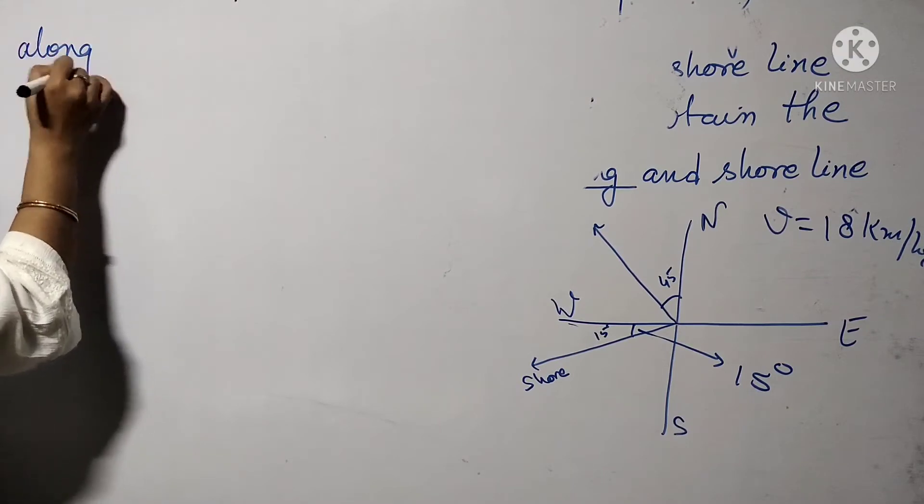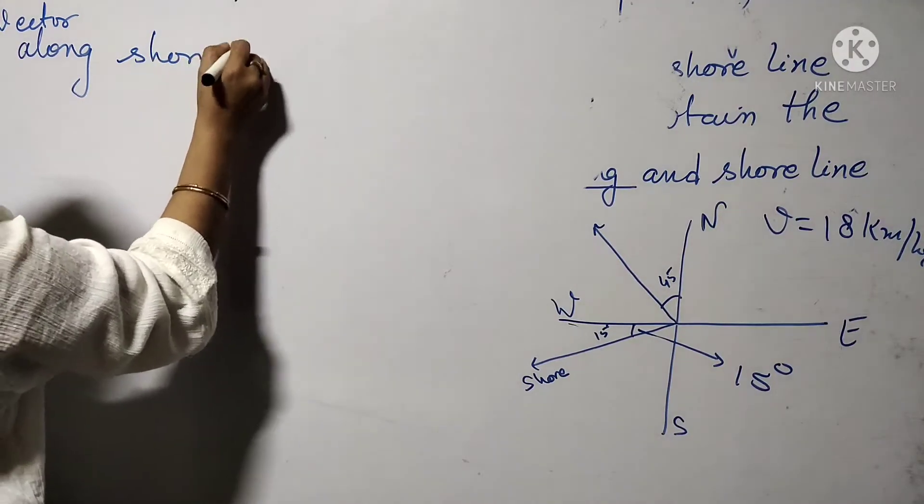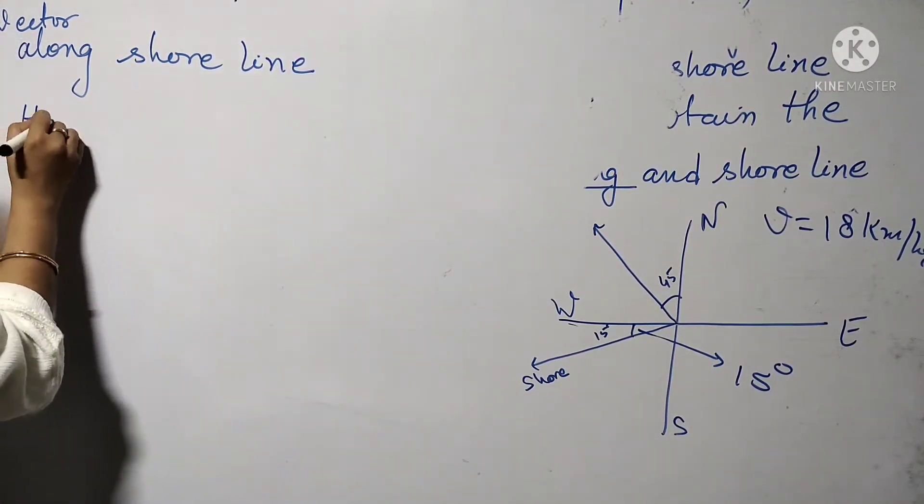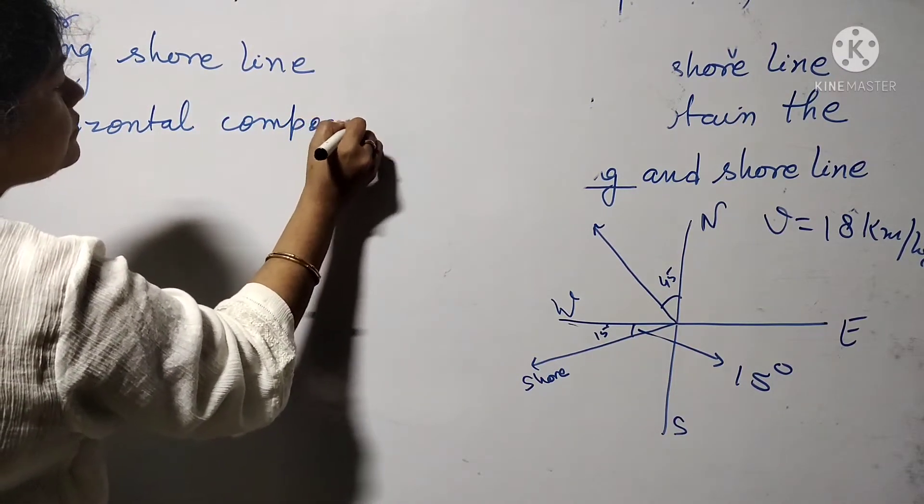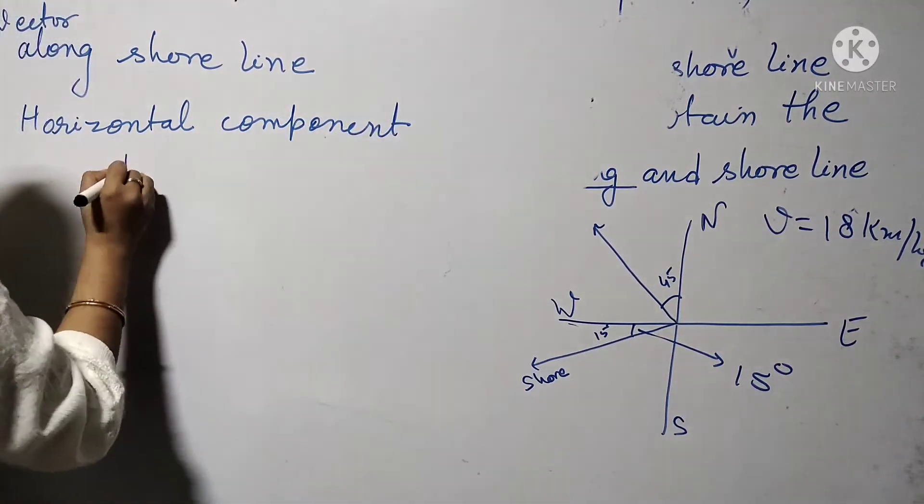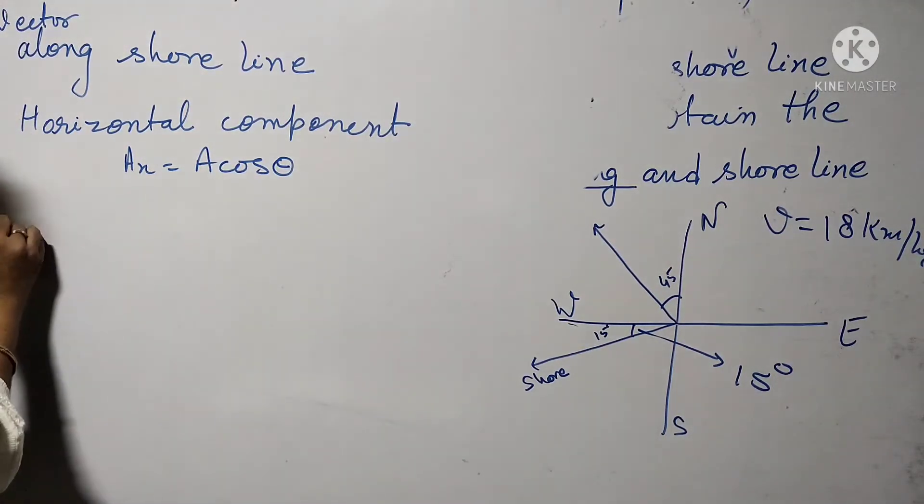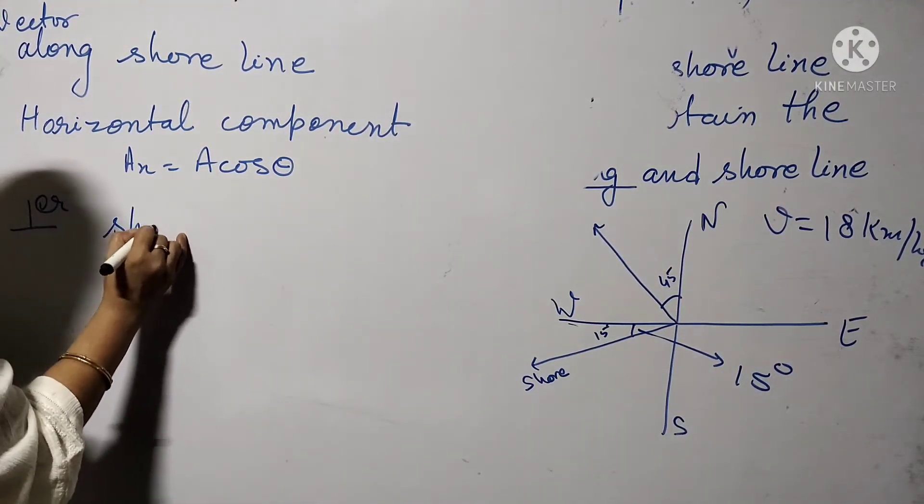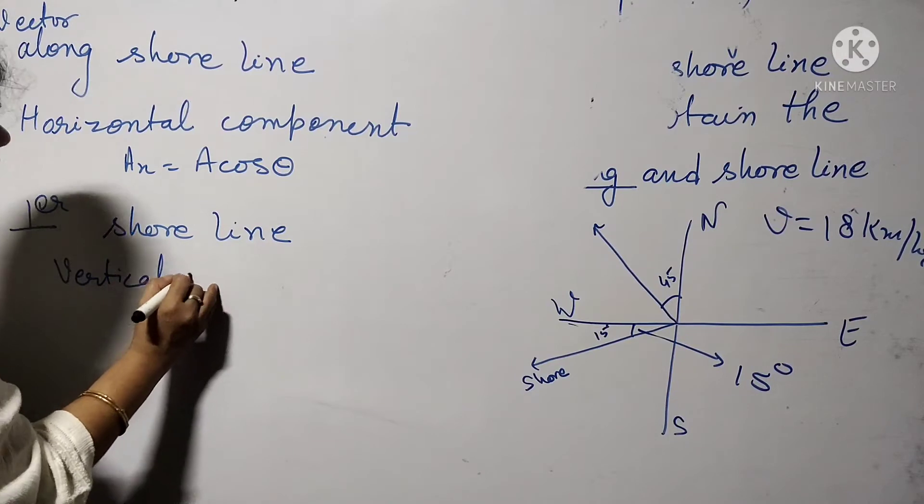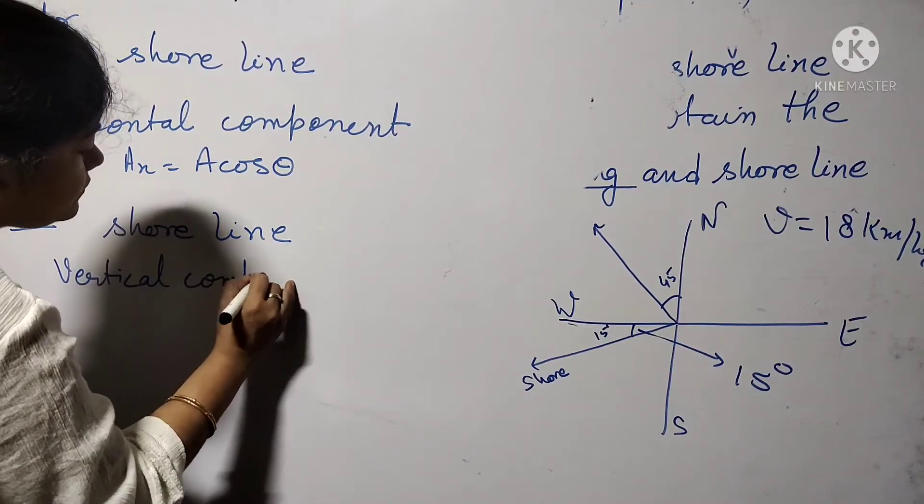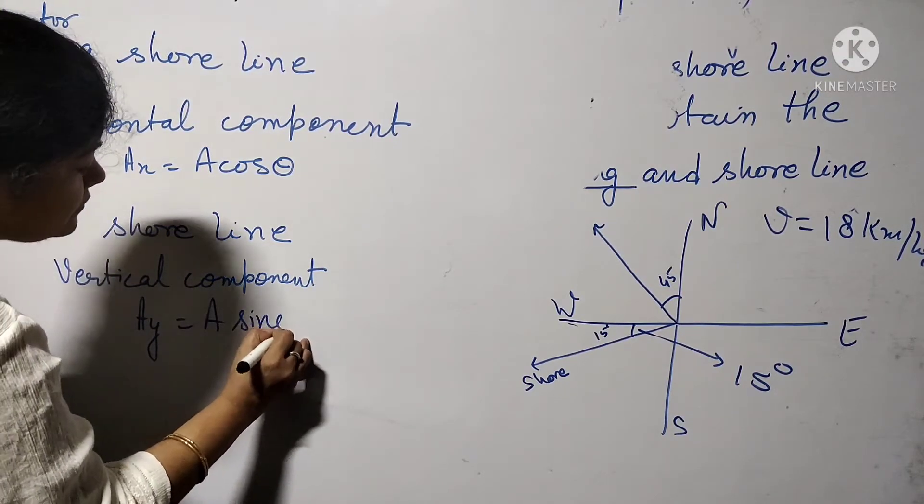If it is given find a vector along shore line, then we have to find horizontal component of a vector, that means Ax equals A cos theta. Perpendicular to shore line, we have to find vertical component of a vector, Ay equals A sin theta.